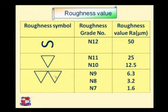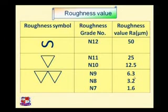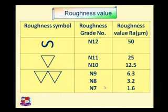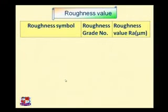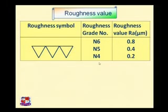The third symbol has two triangles. Two triangles correspond to roughness grades N9, N8, and N7, reducing by one unit each step, with the roughness value halving itself similarly. The roughness values are: 6.3 micron for N9, 3.2 micron for N8, and 1.6 micron for N7. More triangles means a smoother surface with a lower roughness value.